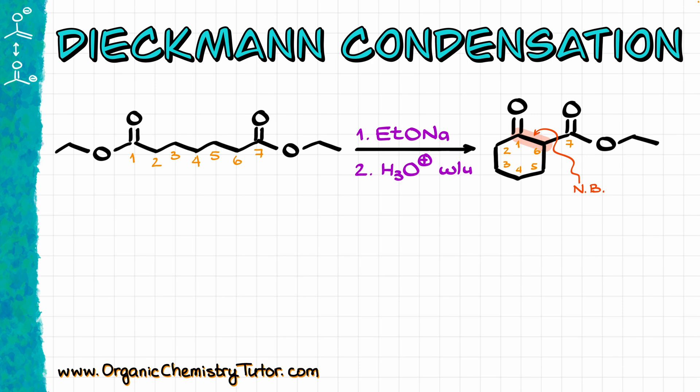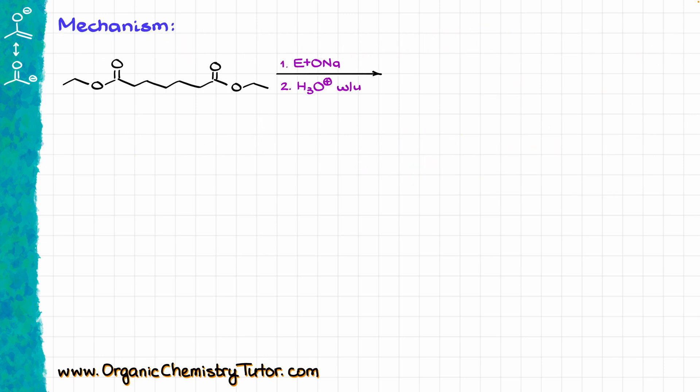Unlike the Claisen condensation where we start with two equivalents of esters, whether those are the same molecule or different, in the Dieckmann condensation both ester groups are part of the same molecule. As a result, you are going to end up with a cyclic compound and you are going to still form a 1,3-dicarbonyl, although your carbonyls are not going to be sitting on a straight chain, it's going to be part of the cyclic moiety. So let's go ahead and take a look at the mechanism of this reaction.